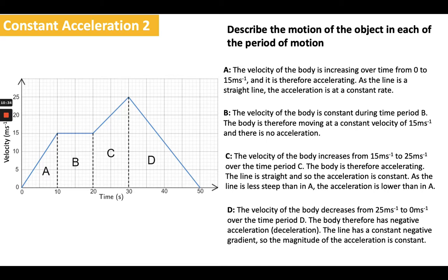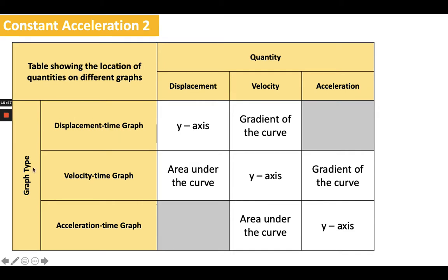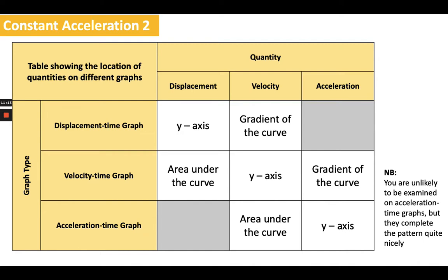That's all you need for the sheets and for the pre-quiz. I'm going to give you one extra slide with some useful notes — I'd recommend pausing and taking them down. This summarizes how we deal with displacement time graphs and velocity time graphs. The table shows different graph types and the quantities, and where they appear on the graph. For example, the acceleration on a velocity time graph is the gradient of the curve. I've also added acceleration time graphs in at the bottom — you're unlikely to be examined on those, but they complete the pattern nicely and I think it's useful for our understanding. Once you've made good notes of that, my recommendation is to move on to the pre-quiz, and once you finish that, move on to completing 9.2.